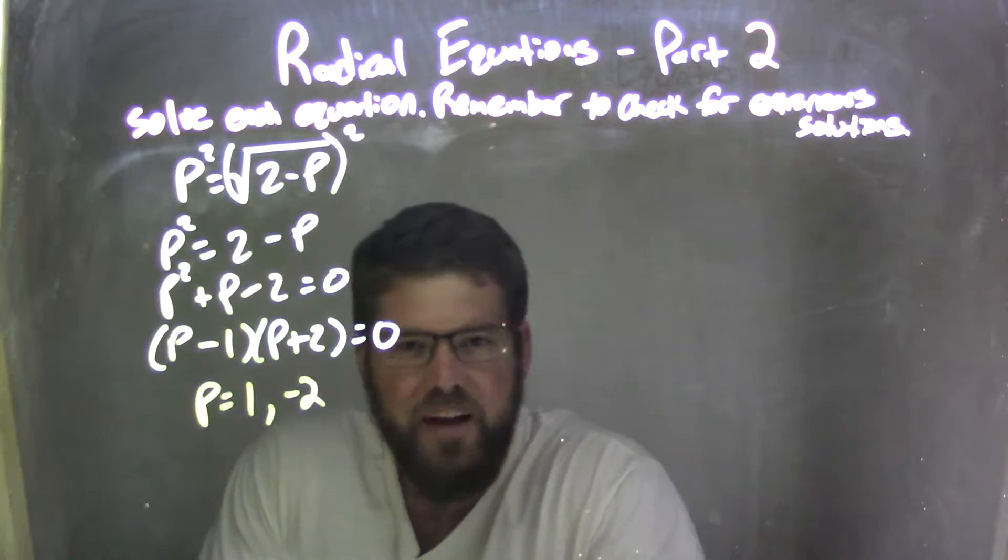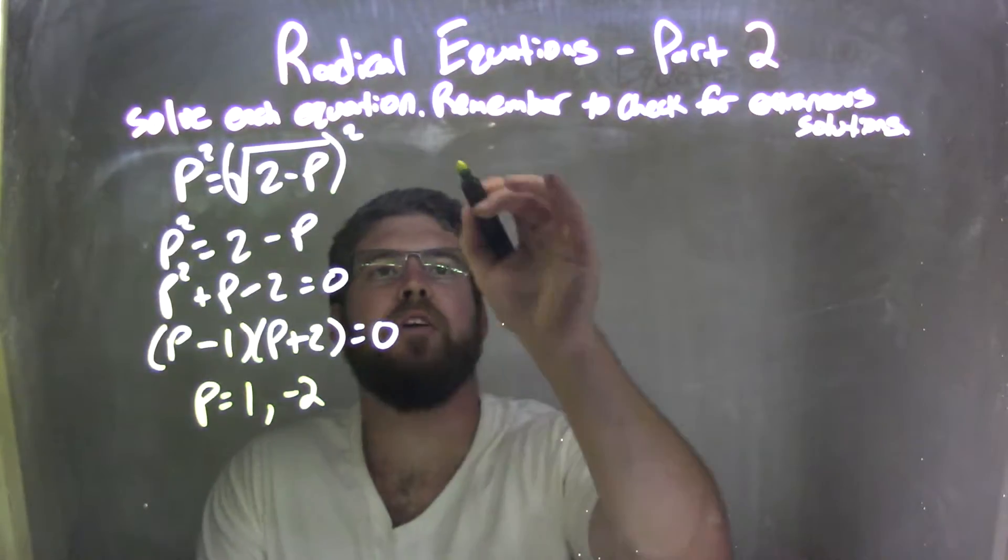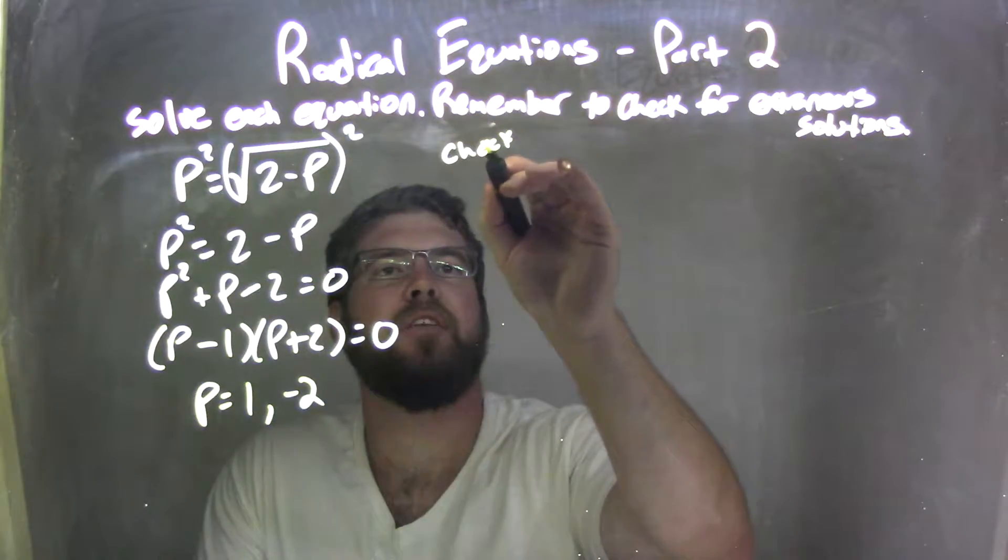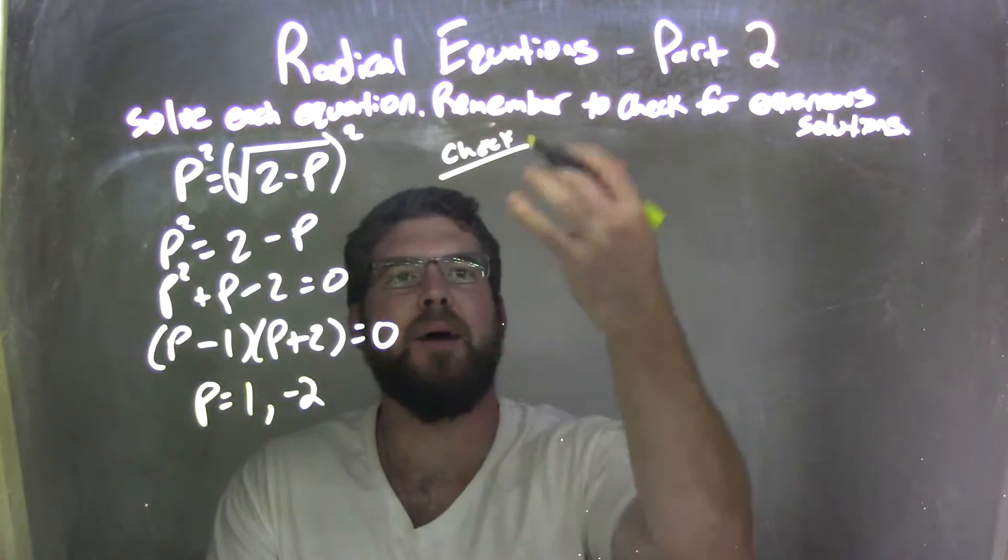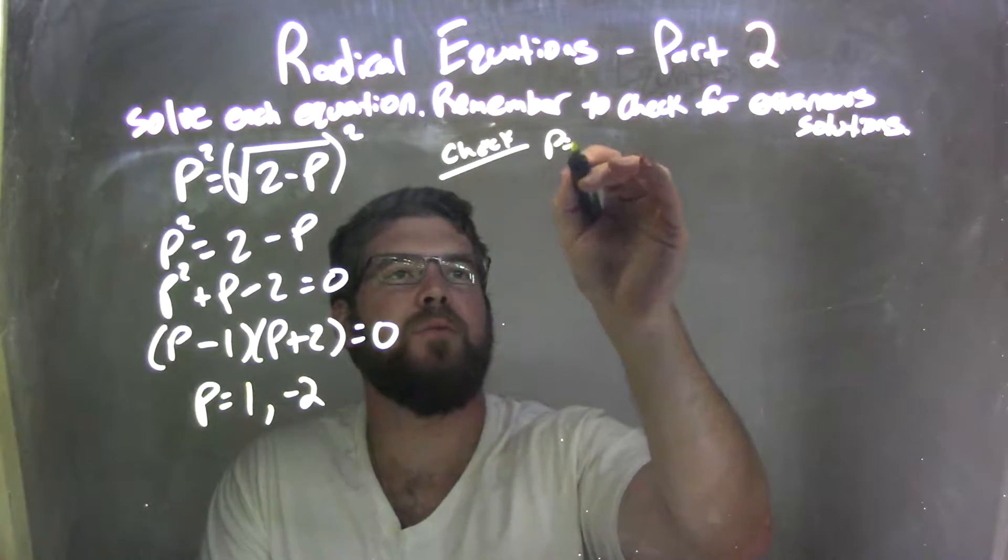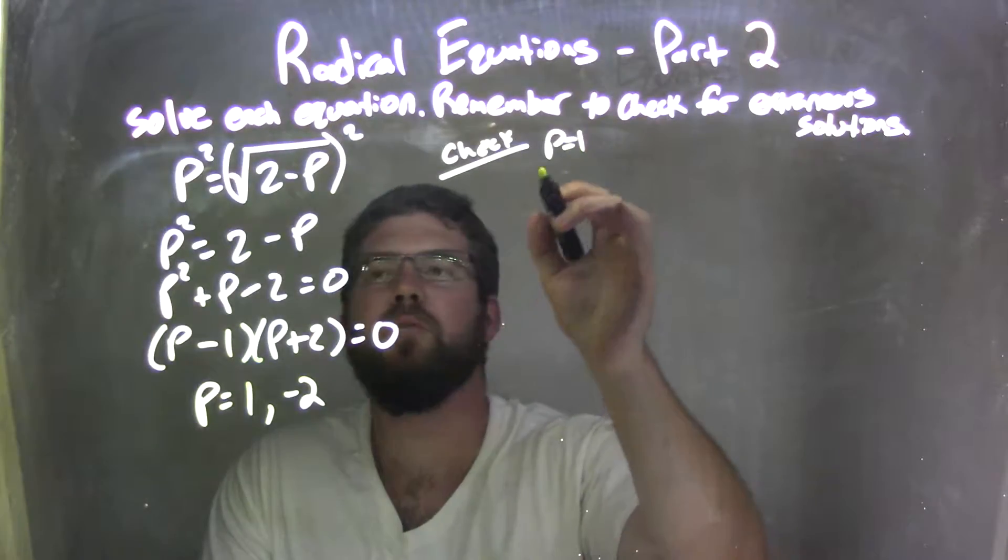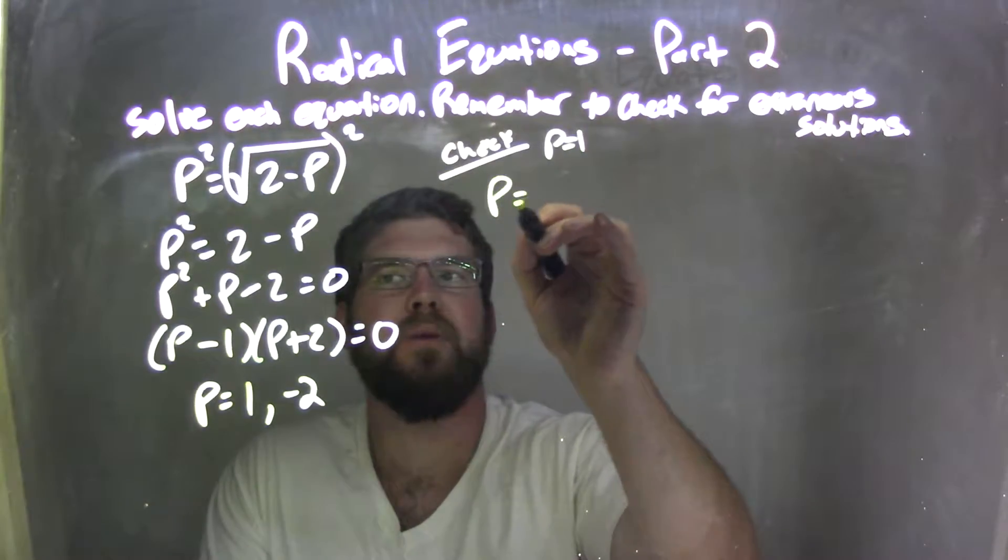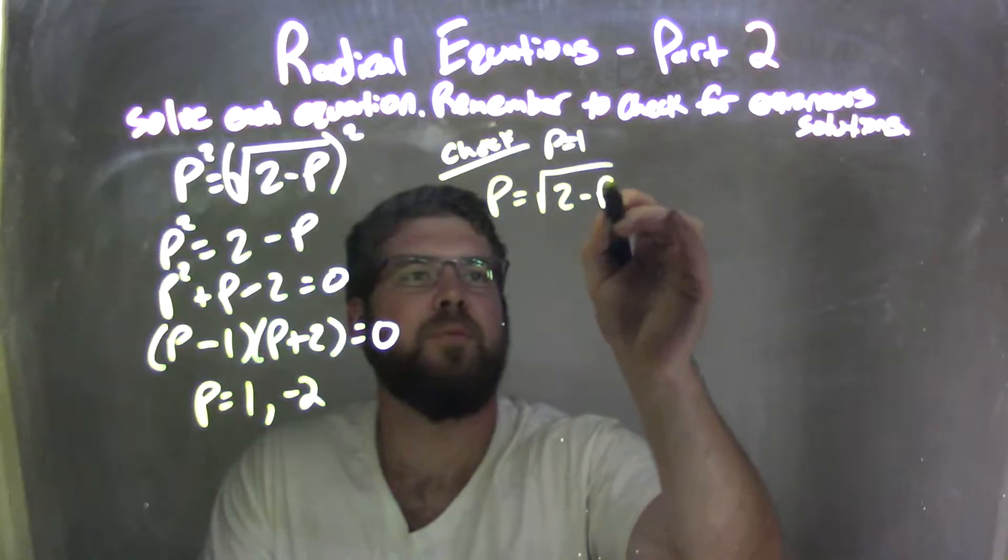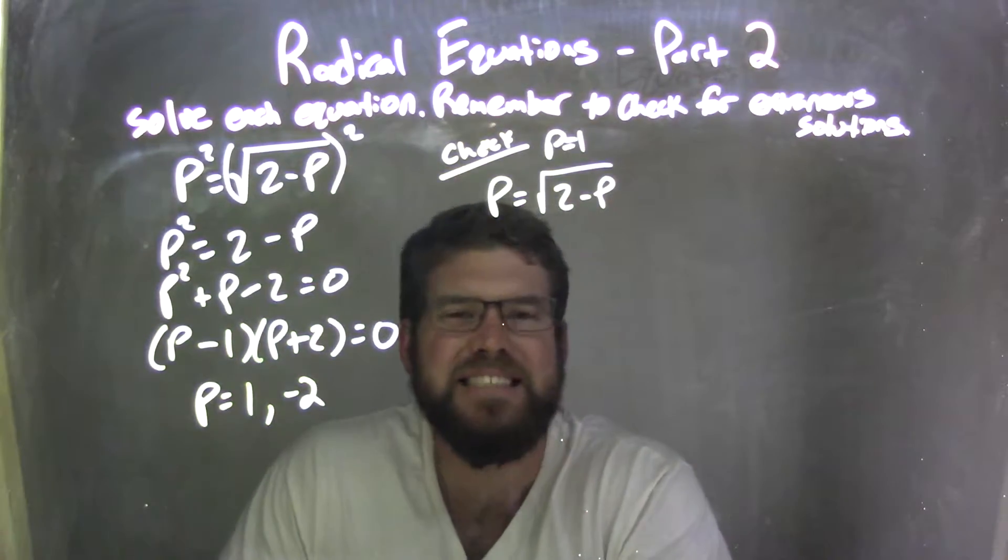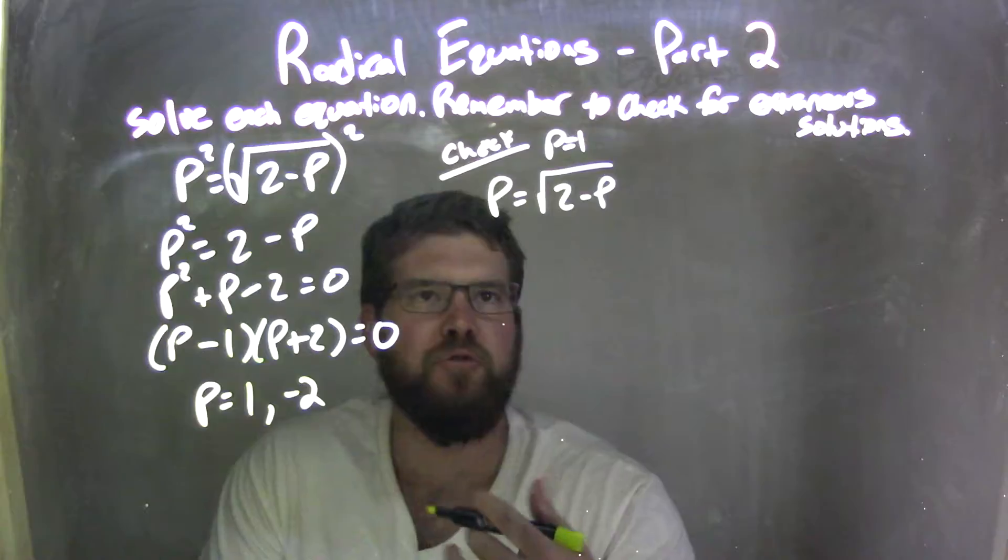But I need to check if they are extraneous. So here's my check. So to check it, I'm going to start with the first one. Say p equals 1. And I'll take my original equation, p equals the square root of 2 minus p, and I'm going to plug 1 in for p, for both p's, to see if it comes out to be a true statement.